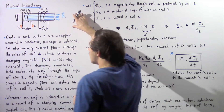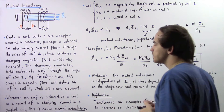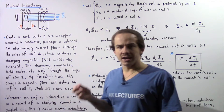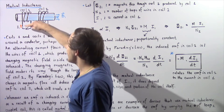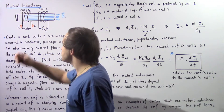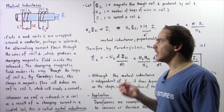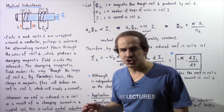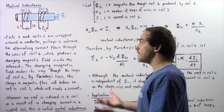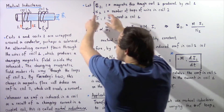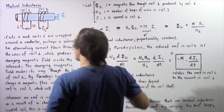Let's call this coil number one, which has some number of loops, and coil number two, which also has a certain quantity of loops. Now let's allow an alternating electric current to flow through the wire of coil number one. As that current changes with time, it will create a changing magnetic field within the solenoid, and that changing magnetic field will travel along the solenoid and eventually reach the loops of coil number two.